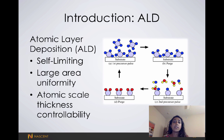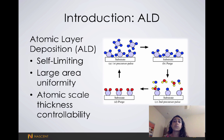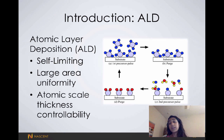The second precursor is ammonia gas. Precursor is just a synonym for reactant. With TD-MAT and ammonia as our precursors, we can form titanium nitride using an ALD process.